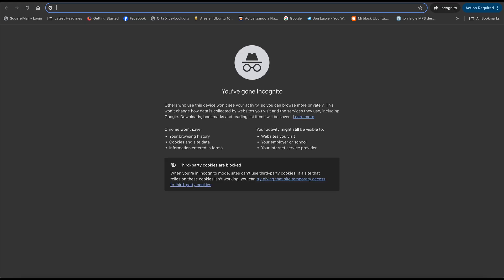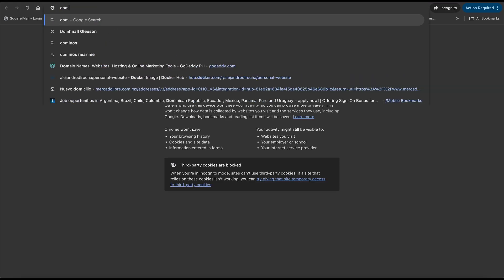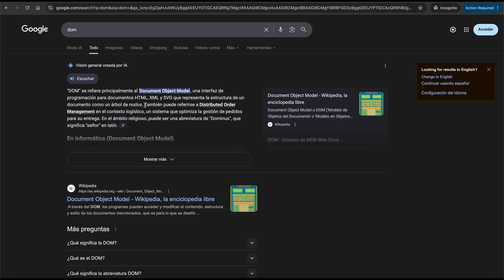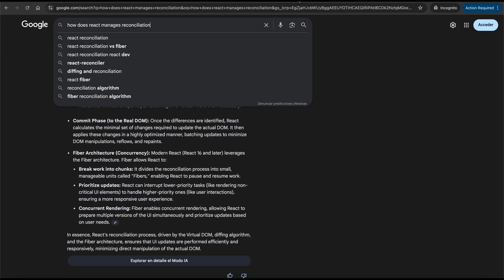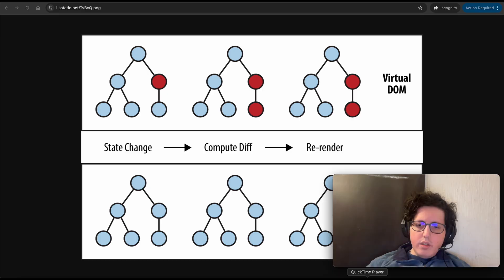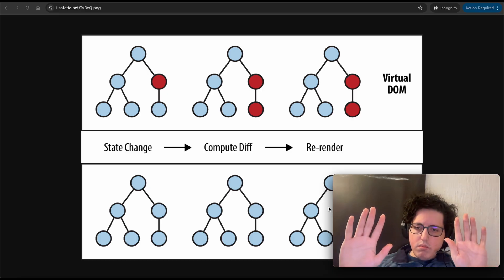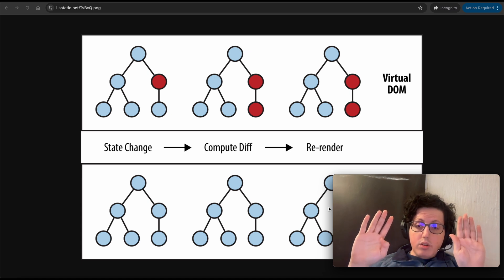DOM is Document Object Model. So React, when you start a React app, it creates a Virtual DOM. What is a Virtual DOM? It's a copy of the actual DOM.